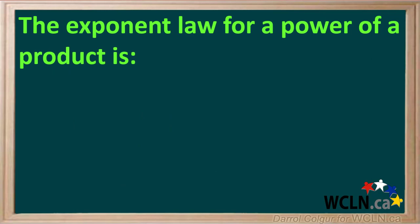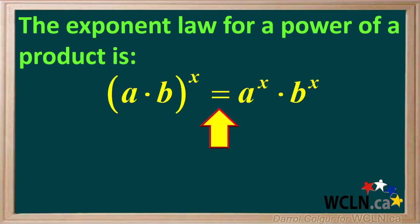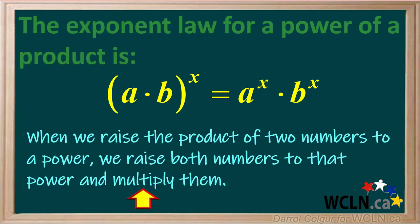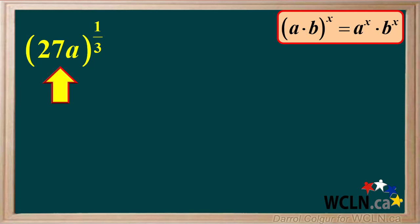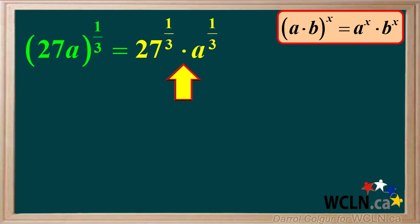The exponent law for a power of a product is: a times b to the power of x is equal to a to the power of x times b to the power of x. In other words, when we raise the product of two numbers to a power, we raise both numbers to that power and multiply them. We have 27a raised to the power of 1 third. Since 27a is the product of 27 and a, this is equal to 27 to the 1 third times a to the 1 third.